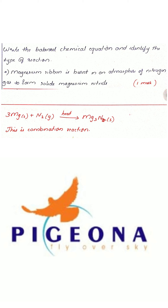This is a combination reaction — two reactants combine together to form a single product. Since only one product is formed, this is a classic example of a combination reaction.